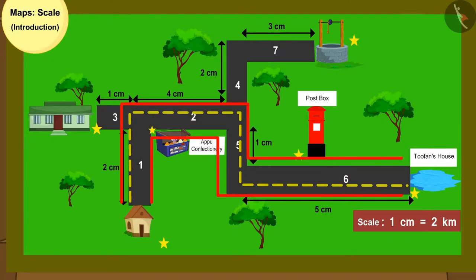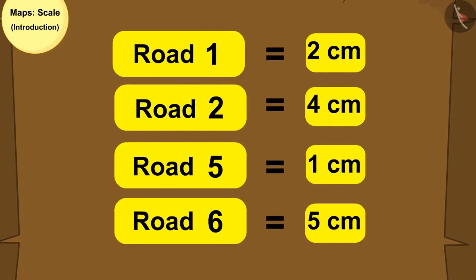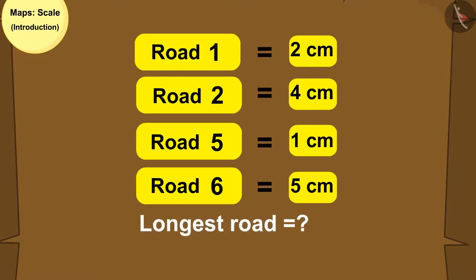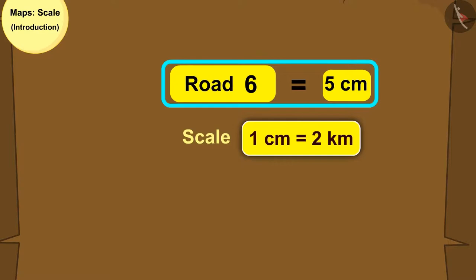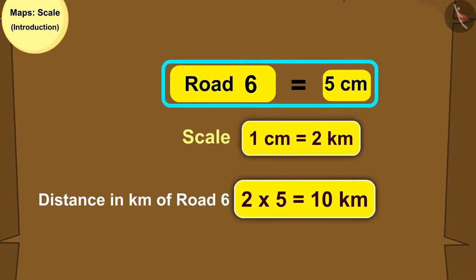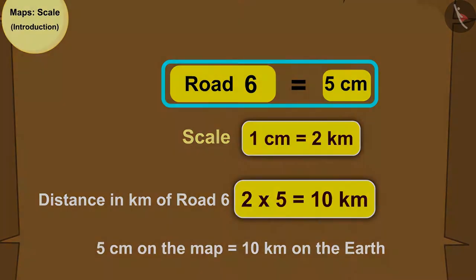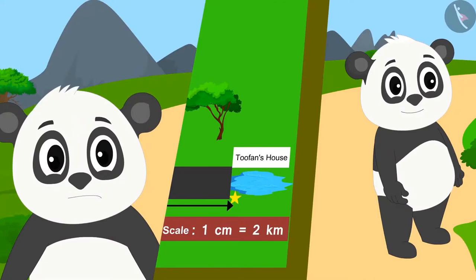Here the distances of all the roads coming in the way of Golu are shown in centimeter. Now can you identify the longest road on the way? Now use the scale to tell the distance in kilometer of the longest road. You can pause the video and find the answer. Yes, your answer is absolutely correct. Road number 6 is the longest road and its distance is 10 km.